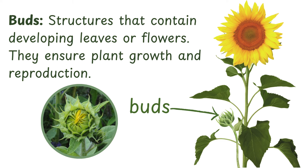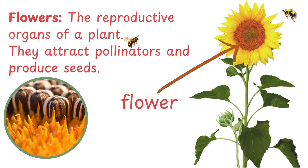Buds are structures that contain developing leaves or flowers, ensuring plant growth and reproduction. Flowers are the reproductive organs of a plant; they attract pollinators and produce seeds.